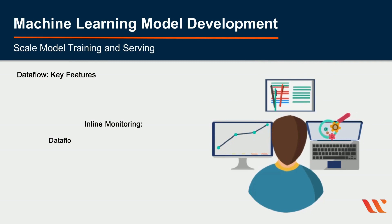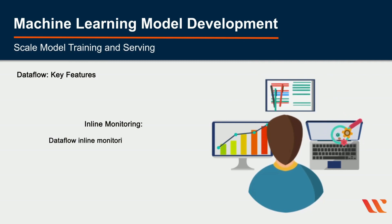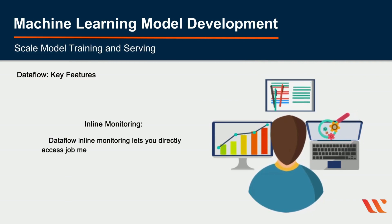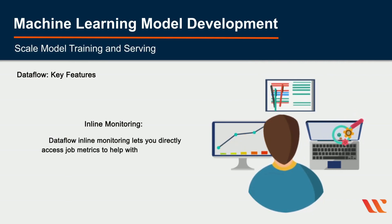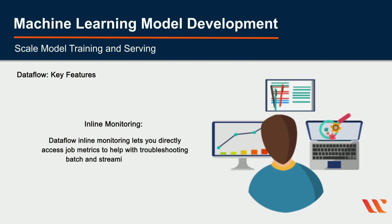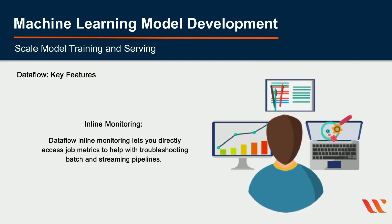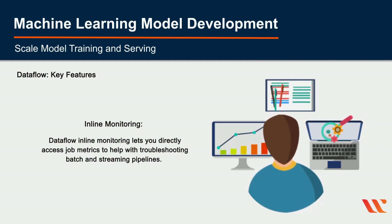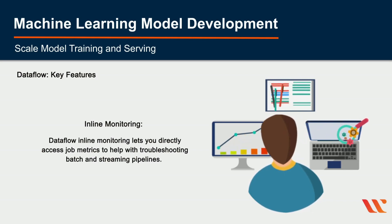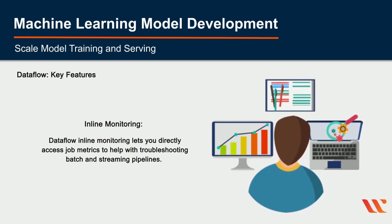Inline Monitoring: Dataflow inline monitoring lets you directly access job metrics to help with troubleshooting of batch and streaming pipelines. You can access monitoring charts at both the step and worker level for visibility, and set alerts for conditions such as stale data and high system latency.